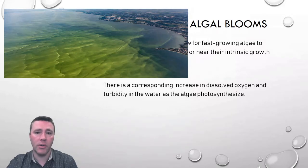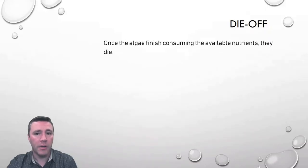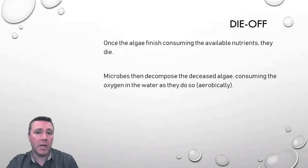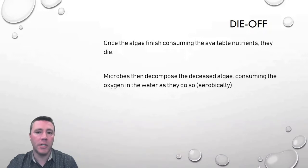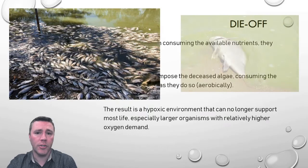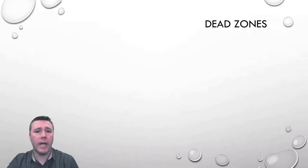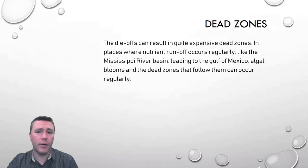But the fate of those algae is already sealed, because eventually, as they consume all of the nutrients available to them, they will die off. Those dead algae are going to be consumed by microbial decomposers that will do so aerobically, consuming both the algae and the oxygen in that water. The result of this aerobic decomposition is a hypoxic environment — an environment so low in oxygen content that larger organisms, which require relatively high levels of oxygen, simply cannot survive. Algal die-offs can lead to dead zones that are quite expansive.